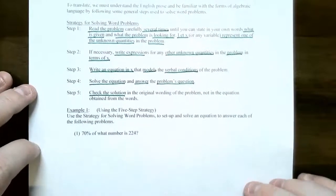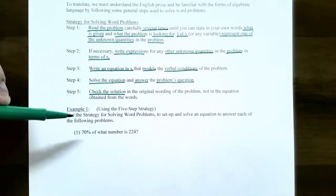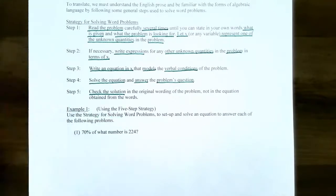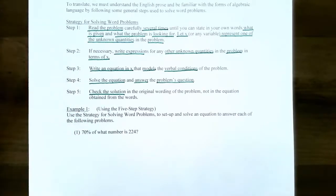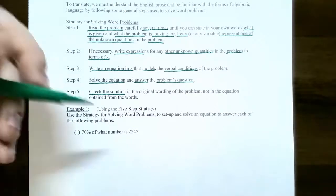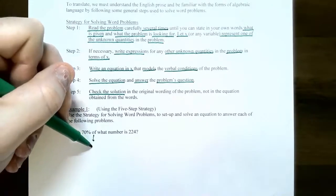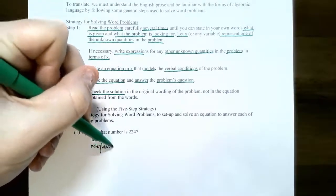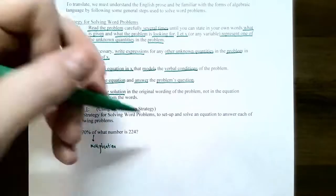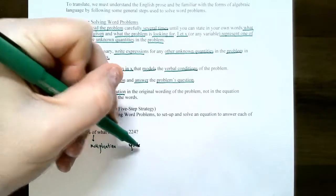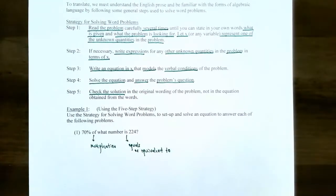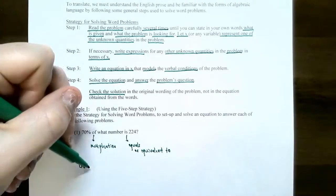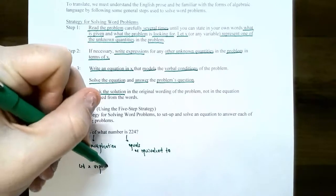Let's try the five-step strategy with a couple of examples. Example one: 70% of what number is 224? There are some key words to be aware of — the word 'of' means multiplication, and the word 'is' means equals. Starting with step one, we need to represent x. Since we don't know anything about the number, let x represent the number.